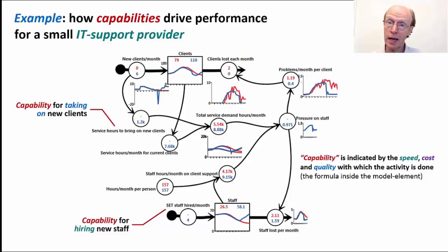And what do we mean by capability? Well, capability is indicated by the speed, the cost and the quality with which activities are being done. So how quickly can you take a new client on? How cheaply, at how low a cost can you take that client on? And when you've taken them on, how well do you understand the IT systems that you're needing to support? Same with staff: How quickly do you take on new staff? How little do you have to spend to take on those staff? And when you hire them, are they any good?